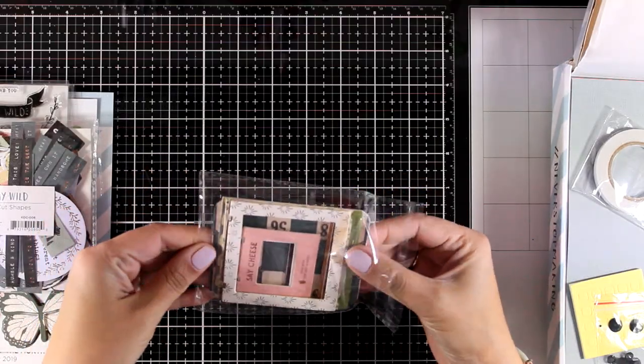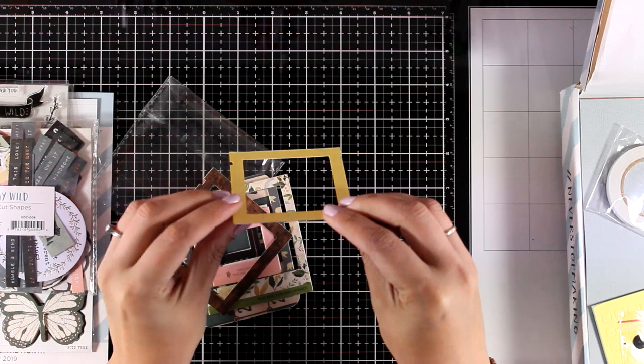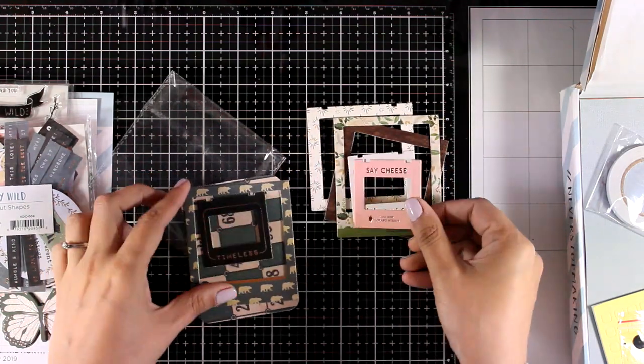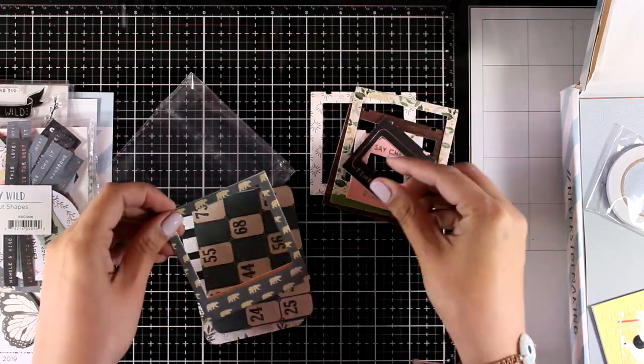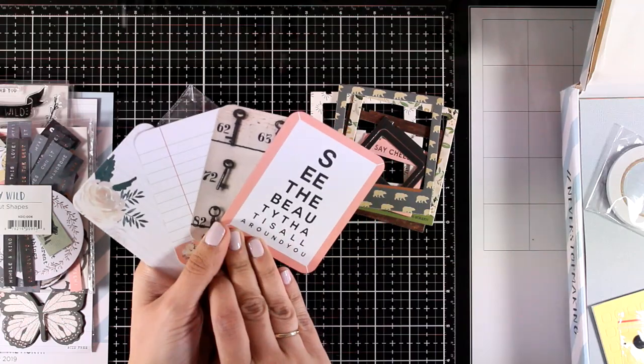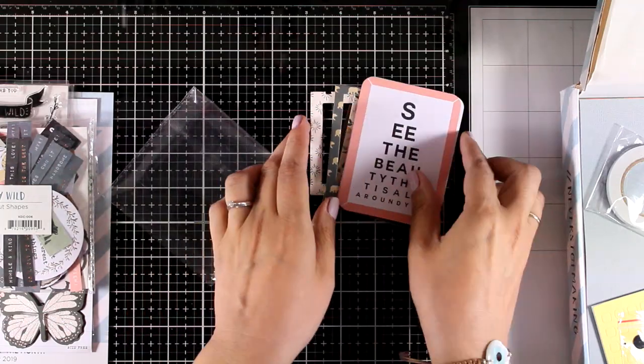And let's open up this bag and see what's included. You will find here chipboard frames and these have adhesive at the back so you can just peel it off and use it on your projects. And you will also get four journaling cards, double sided, which are great as focal points on top of your cards.